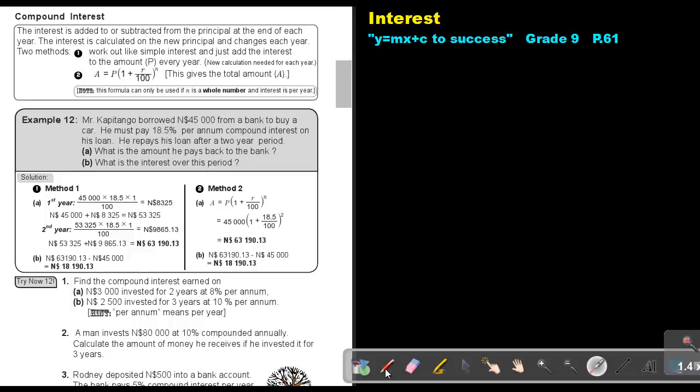I want you to stop the video and I want you to do try now 12, I want you to do number 2. It's try now 12, and we are going to focus on number 2. A man invests 80,000 at 10% compounded annually. Calculate the amount of money he receives if he invests it for 3 years. So let's start.